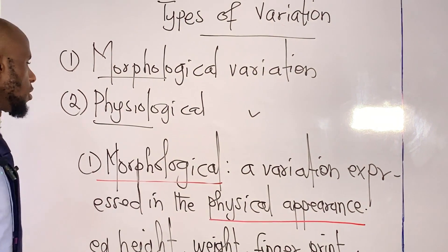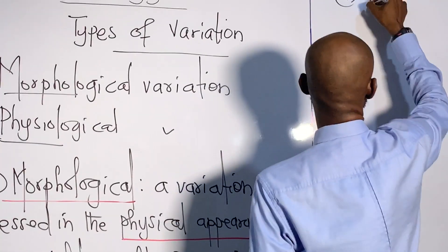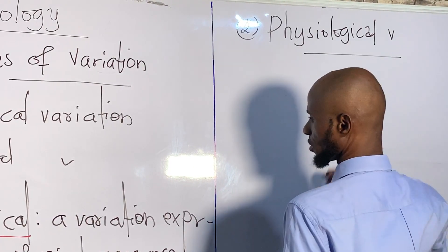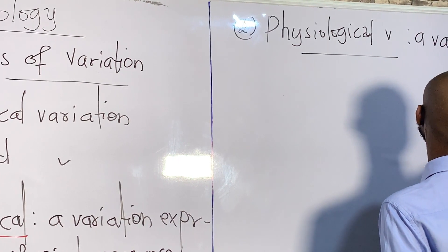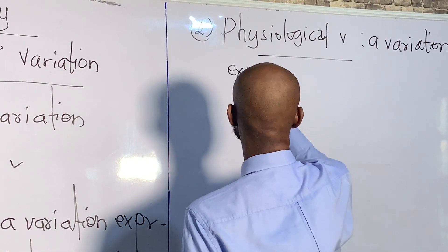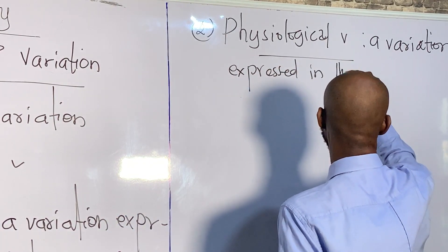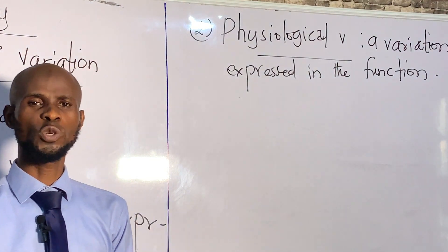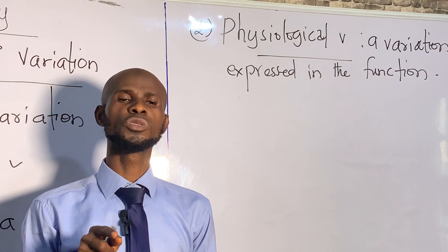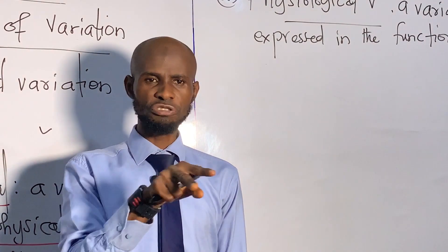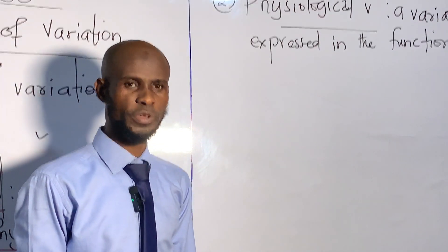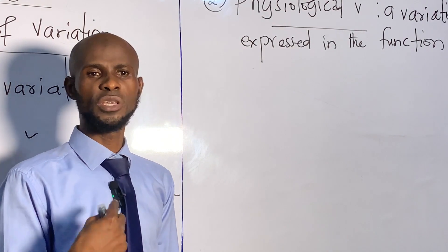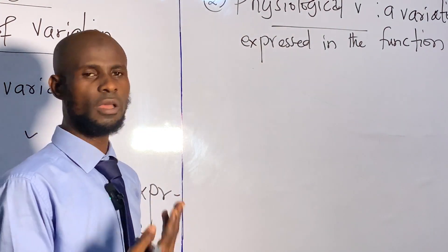Now let's go to the second type of variation — physiological variation — that is expressed in the function performed by an individual. Mere looking at two organisms, you cannot be able to differentiate between them in terms of physiological variation traits, because it is only when they perform that function for you that you can say this person varies from that particular person.